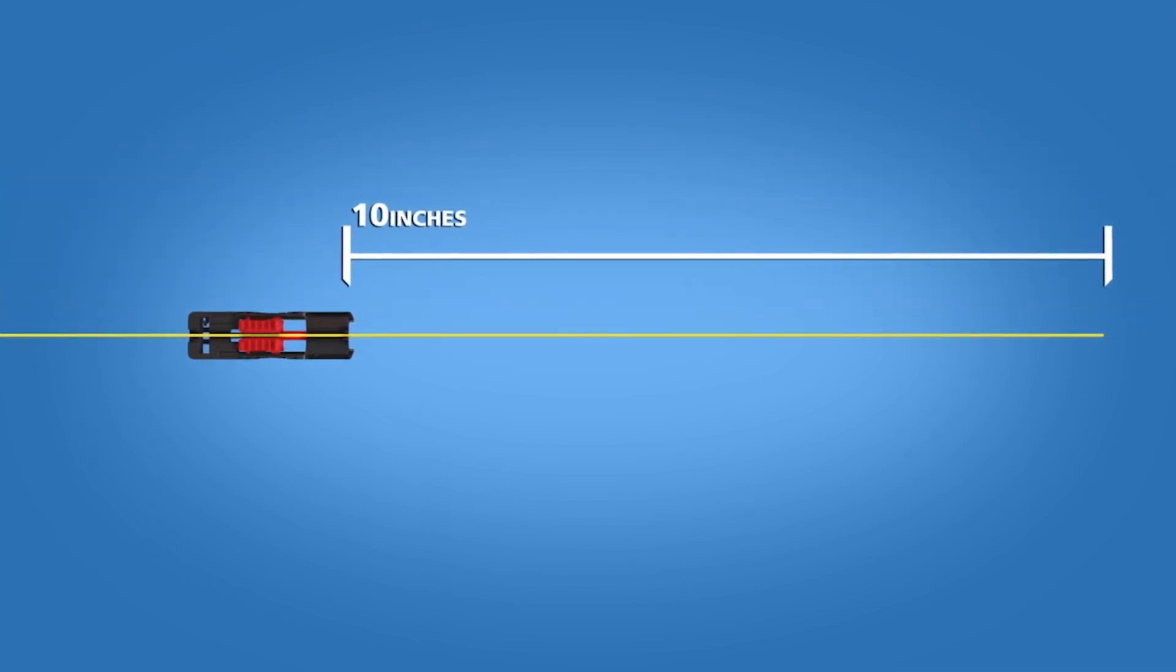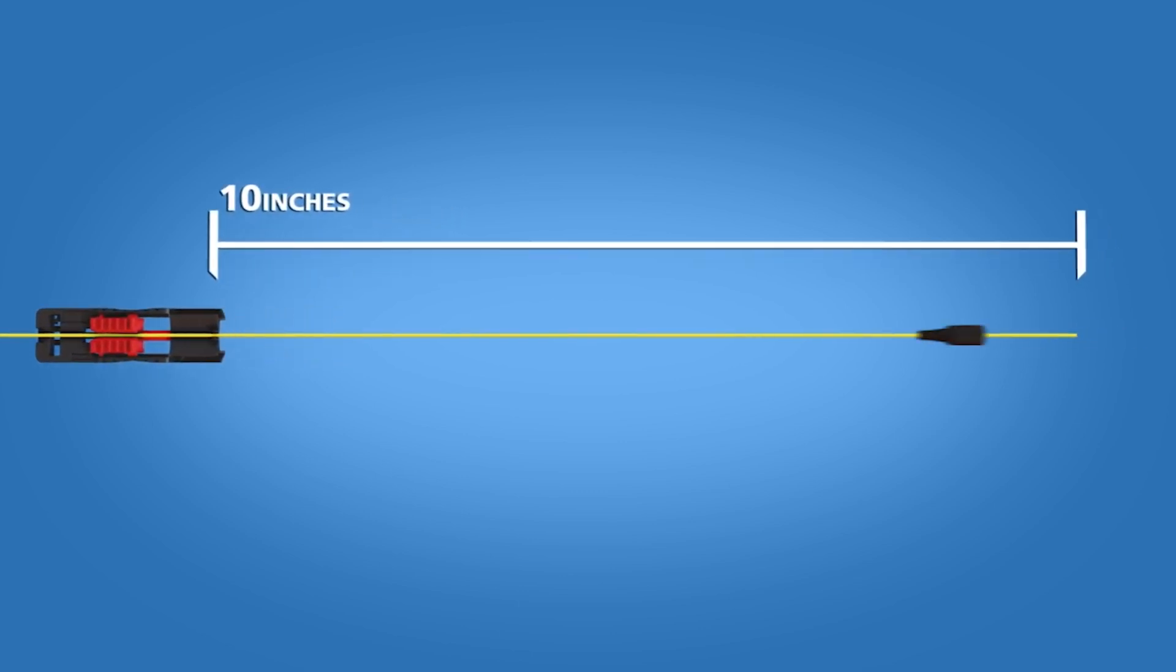For 900-micron terminations that utilize the 900-micron fan-out breakout kit, begin by placing the 900-micron cable clamp onto the cable about 10 inches from the end. Place the 900-micron boot onto the cable.